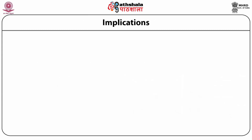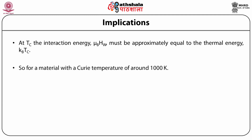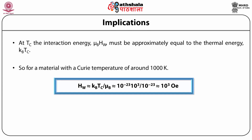Let us discuss the implications of this Curie-Weiss law. At TC, the interaction energy, that is mu-B times HW, must be approximately equal to the thermal energy kB times TC. For a material with a Curie temperature of around 1000 K, HW will be equal to 10³ oersteds, which is a very large field.